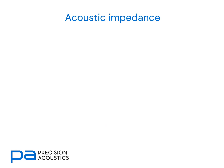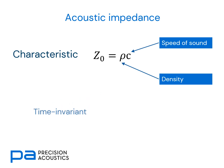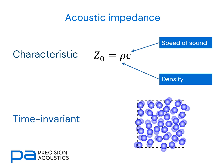The other principal acoustic impedance is characteristic acoustic impedance. This is expressed as the product of speed of sound and density. Notice this is time invariant and is a property of the medium, not of the wave itself. This definition holds on the assumption that we are dealing with isotropic, homogeneous, non-attenuating media.